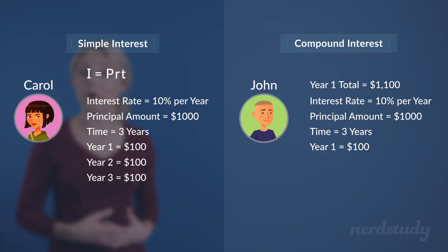So, while both Carol and John would make 10% of $1,000 in the first year, which of course is $100, the second year is when the difference will begin. Carol will make 10% of $1,000 again, but for John, who signed up for compound interest, the 10% he makes in the second year will be off of $1,100, not $1,000.